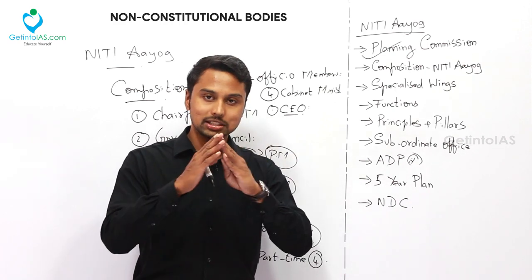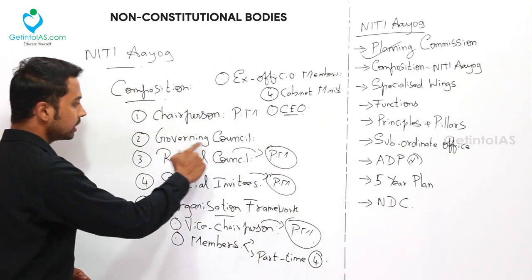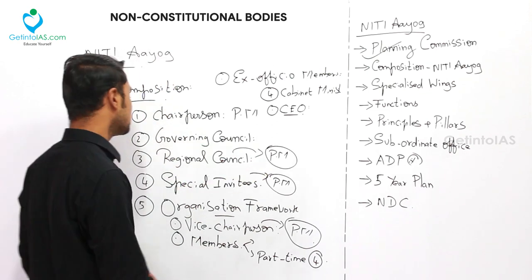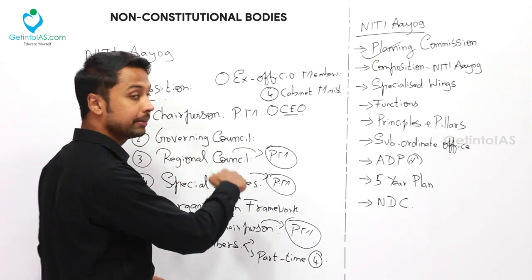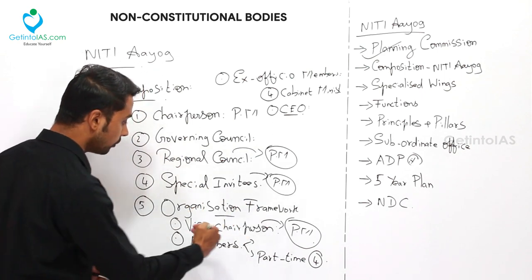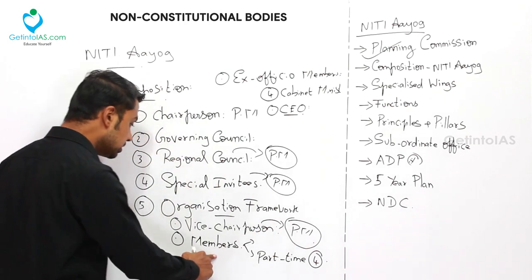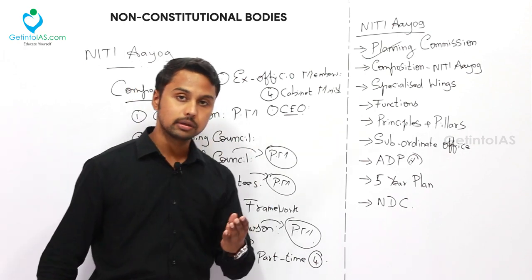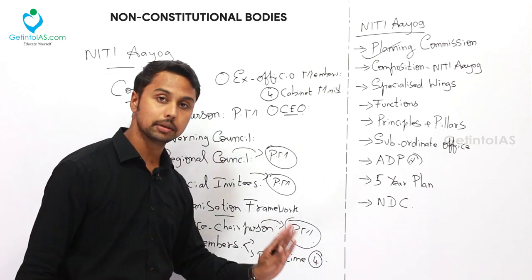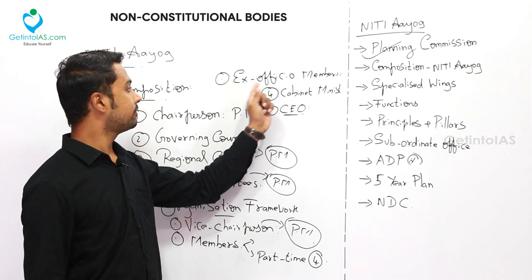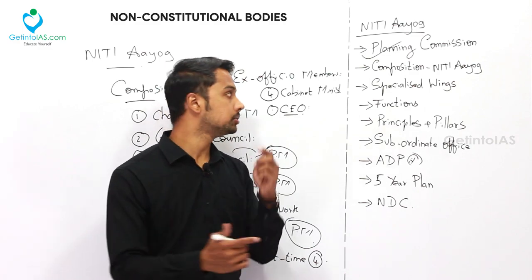To recap the composition of NITI Aayog: Chairperson is the Prime Minister. The Governing Council consists of all CMs of states and Union Territories. Regional Councils are convened by the Prime Minister. Special Invitees are nominated by the Prime Minister. Under the full organizational framework: Vice Chairperson (appointed by PM, cabinet minister rank), full-time members (no max, Minister of State rank), part-time members (max four), ex-officio members (four cabinet ministers), and the CEO (appointed by PM, Secretary rank).